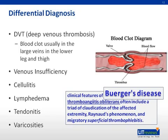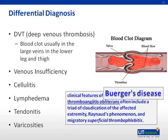The differential diagnosis is very broad and DVT must be ruled out first. Other things to consider are Baker's cyst, cellulitis, chronic venous insufficiency, hematoma, lymphedema, neuritis, tendinitis, and varicosities. Berger's disease includes the triad of claudication or cramping, Raynaud's phenomenon, and migratory superficial thrombophlebitis. Remember, on the boards, Berger's disease is always associated with a smoker.